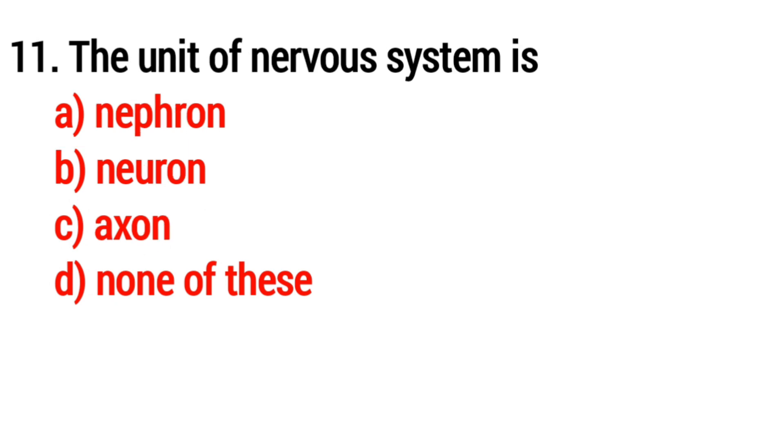Question number 11: The unit of the nervous system is? The answer is Option B, neuron.